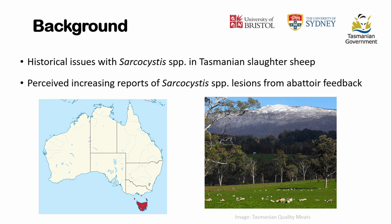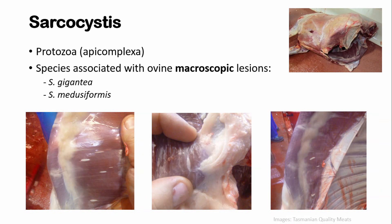We had discussions with the local government and the local abattoir or slaughterhouse. They have perceived increasing reports of these lesions in their sheep. Just to remind you, sarcocystis is a protozoan parasite. There are four species of sarcocystis associated with disease in sheep, two of which are associated with microscopic lesions and clinical disease, and those associated with macroscopic lesions that we would see on meat inspection.